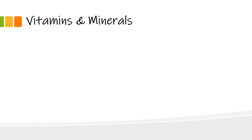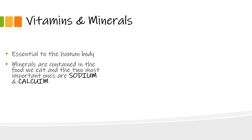Lastly we look at vitamins and minerals. Vitamins and minerals are essential to the human body, and yet we produce very few of them ourselves. Many important minerals are contained in the food we eat. Two of the most important ones are sodium and calcium. Sodium helps to keep the correct balance of water in the body and is found in most foods.